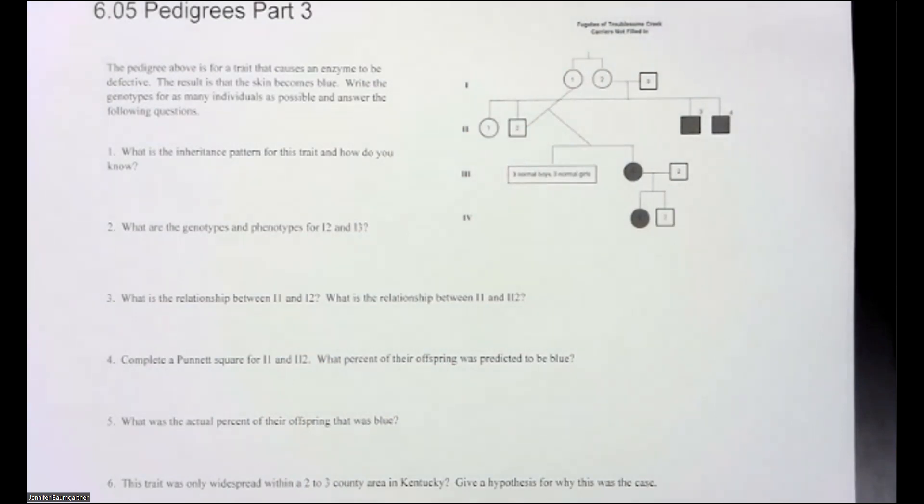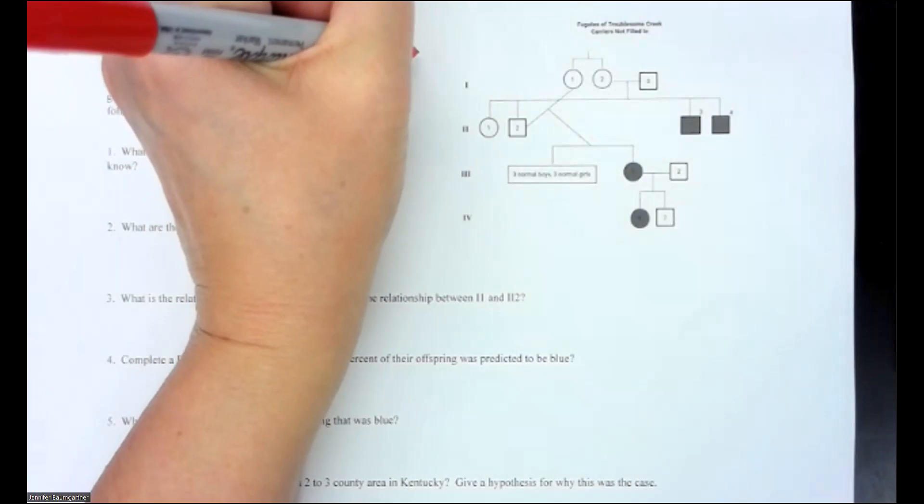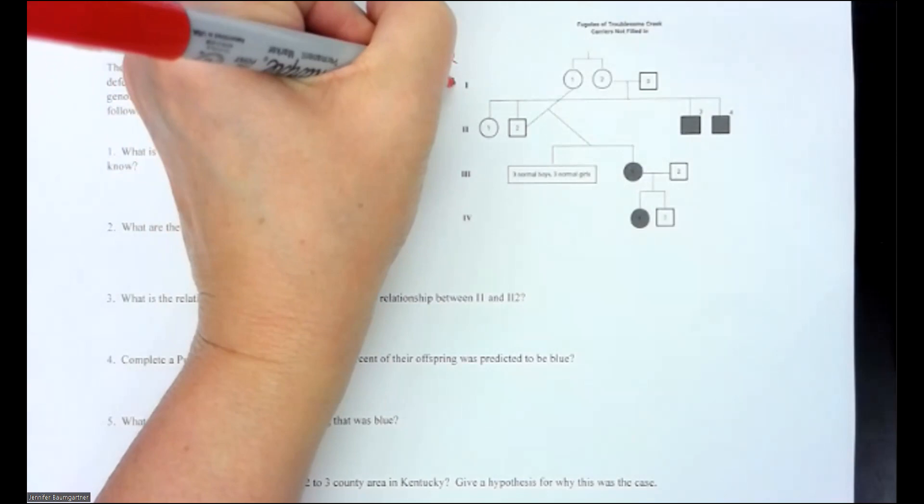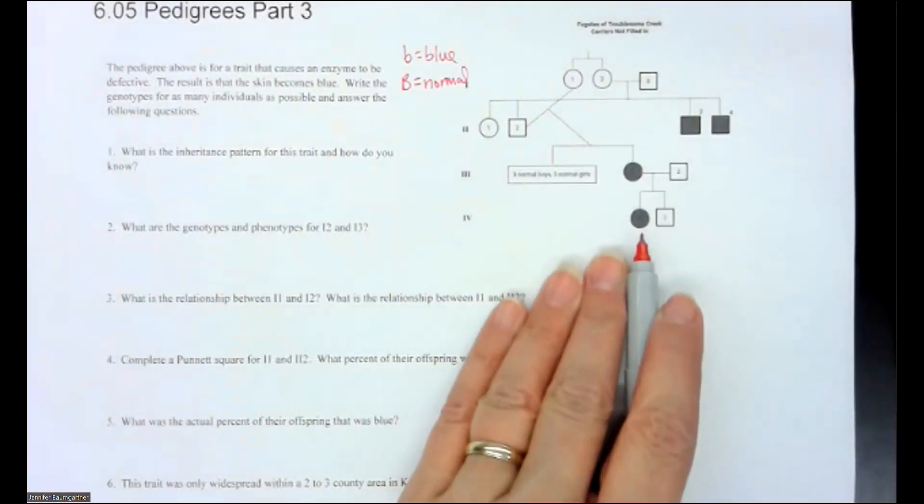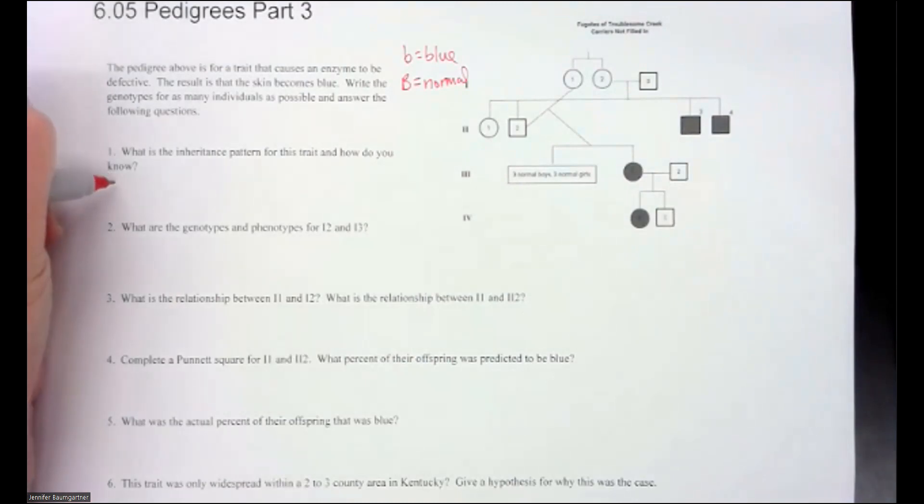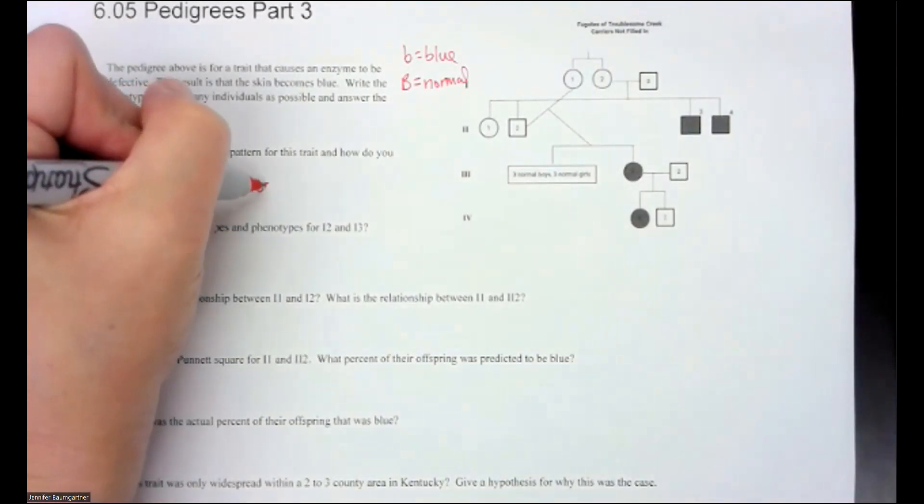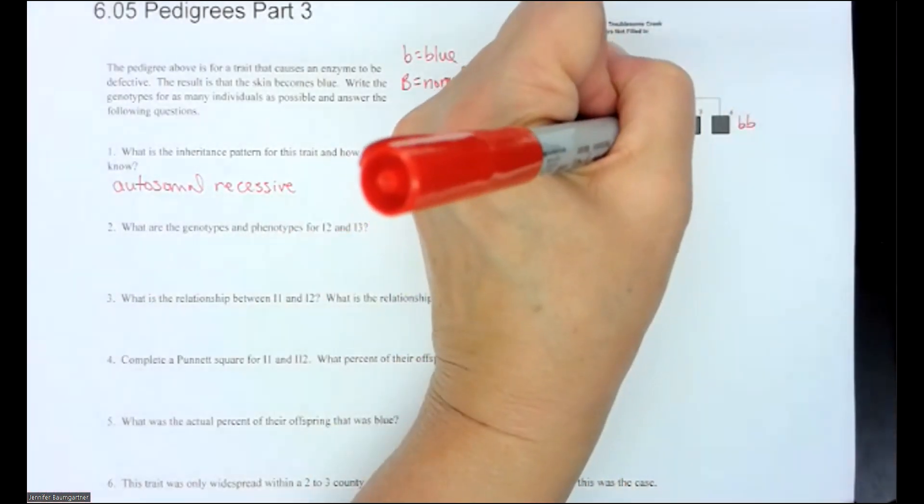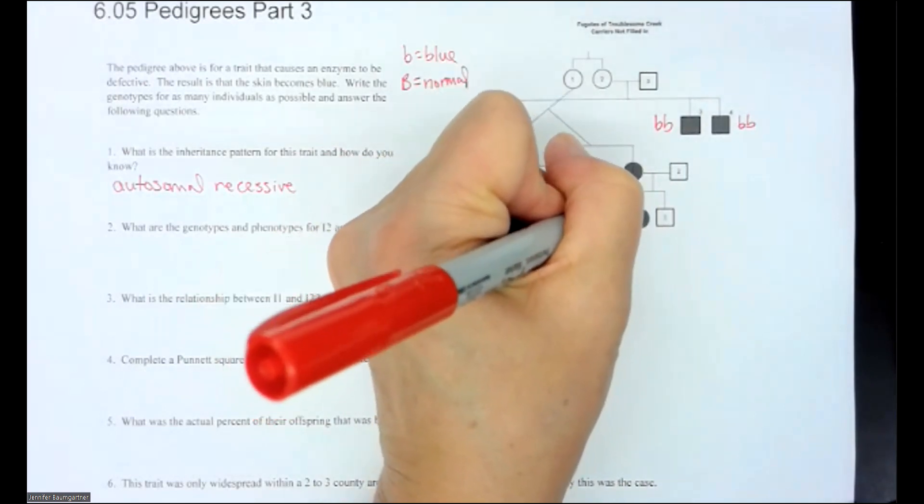So the first thing it says is, let's write down the genotypes for as many individuals as possible. It doesn't tell us what letter to use. So let's say that lowercase b is going to be blue and uppercase B is going to be normal. So we know that all of these people, we know that this is going to be autosomal recessive. So this is going to be a lowercase b, lowercase b, b, and b.